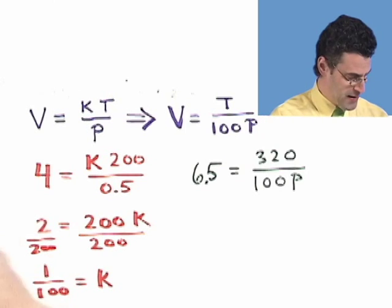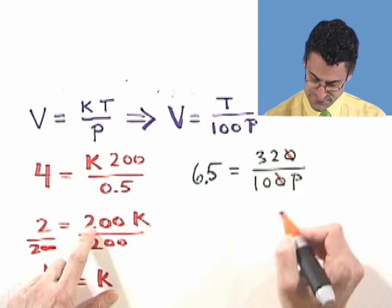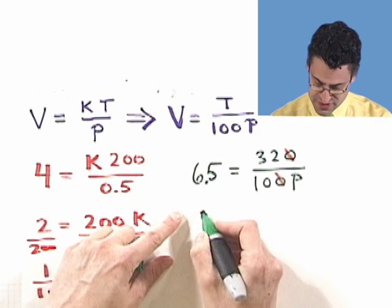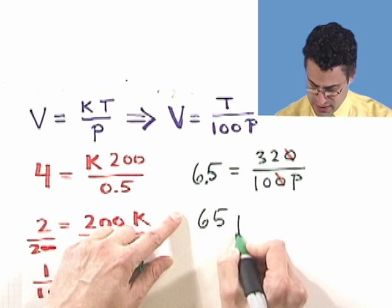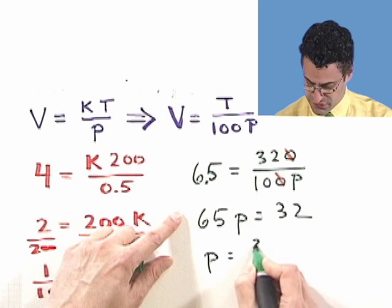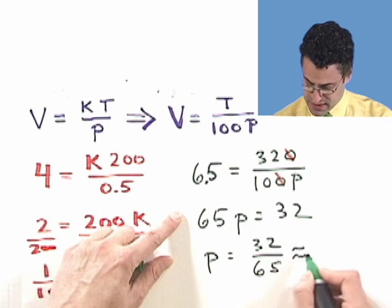So I can simplify this a little bit. In fact, actually, I can divide top and bottom here by a 10. I can then do a little cross-product-y thing. And I see 6.5 times 10, which is 65P, equals 32.